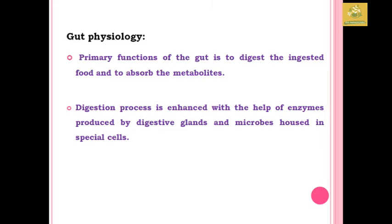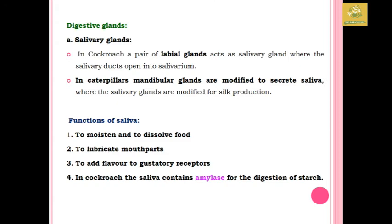Now we are going to see about gut physiology. The primary function of the gut is to digest the ingested food as well as to absorb the metabolites. The digestion process is enhanced with the help of enzymes produced by the digestive glands as well as microbes housed in the specialized cells of the insect body.